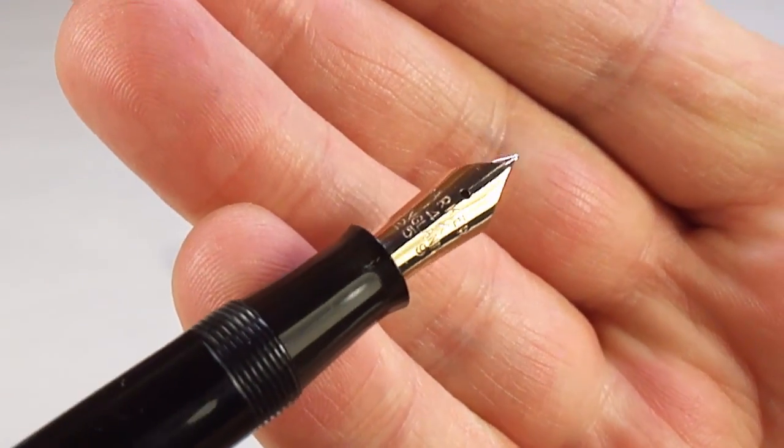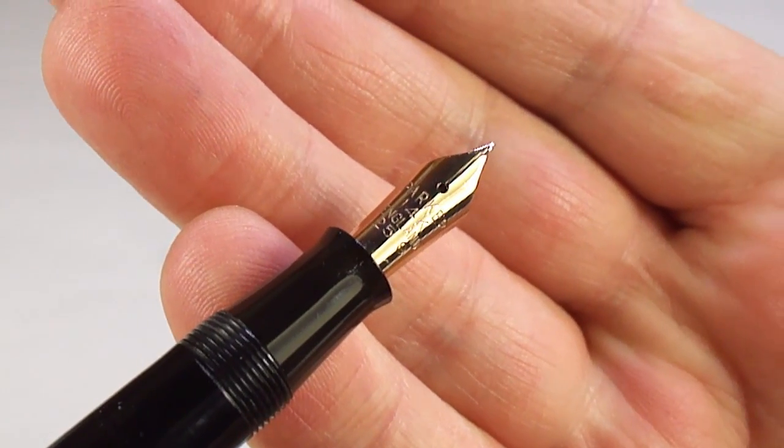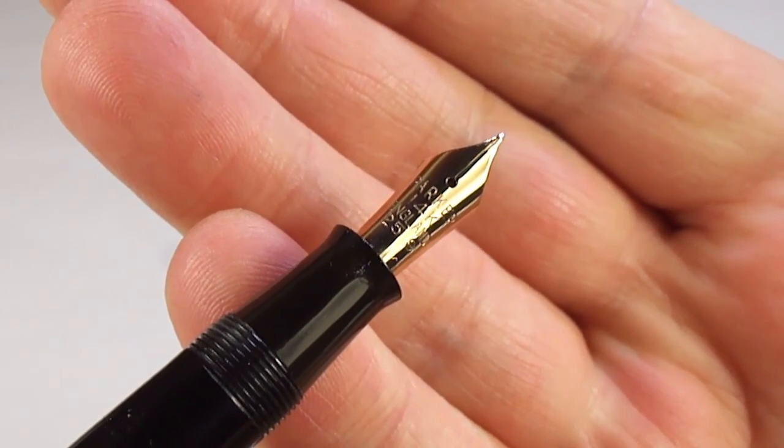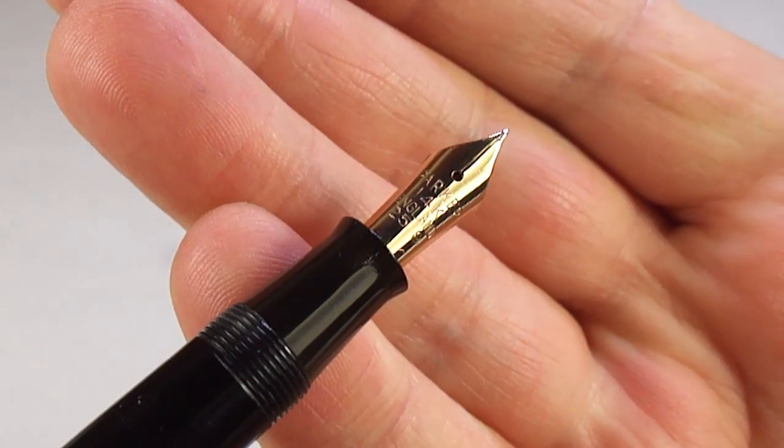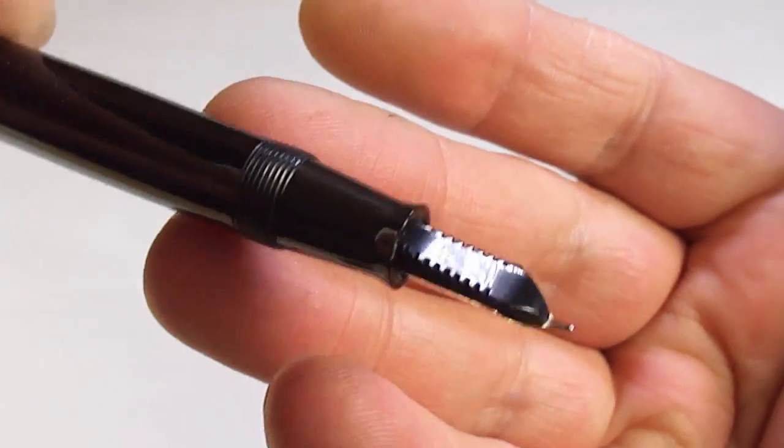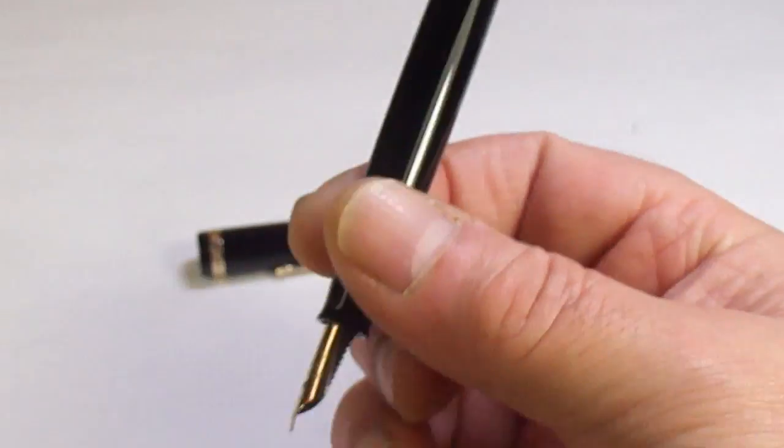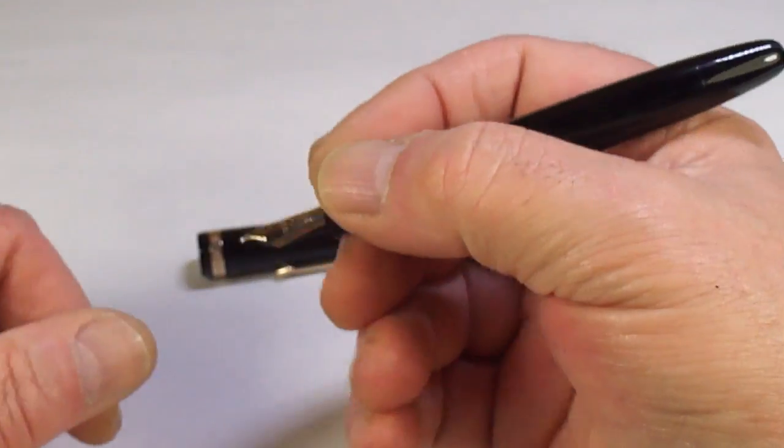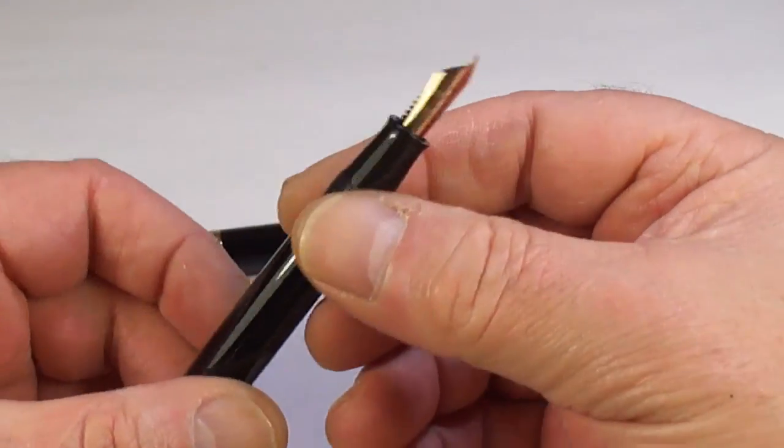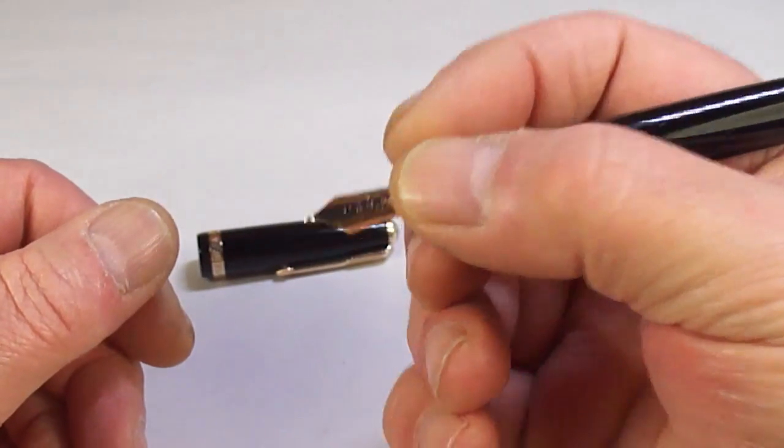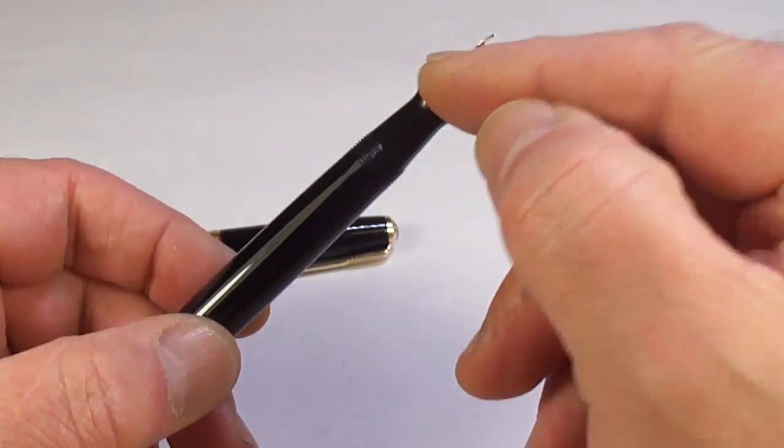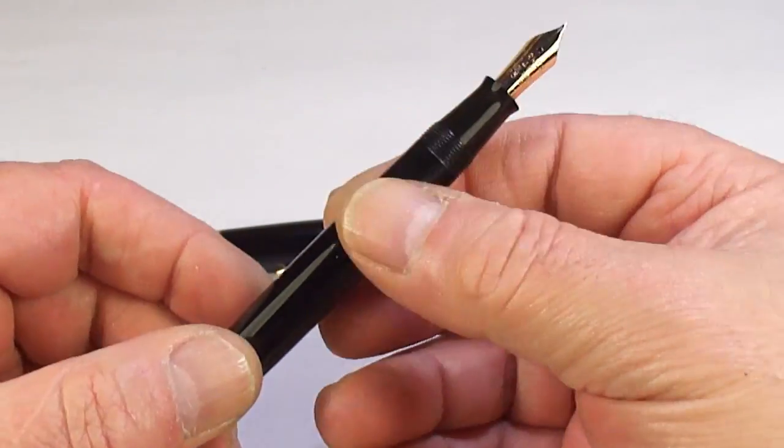If we show you the nib there, keep it nice and still for you, it says Parker 14k England and then it's got a number 25 and then a number 9. There's a sideways view, there's the feed underneath, lovely and clean and ready to go. A lovely sized fountain pen. Coming back to the nib, it says 25-9. The 25 is indicating it's what we term as a standard Duofold, and the 9 indicates it's 1949, so the nib is slightly earlier than the pen.